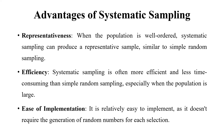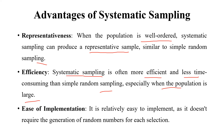Advantages of systematic sampling: first, representativeness — when the population is well ordered, systematic sampling can produce a representative sample similar to simple random sampling. Second, efficiency — systematic sampling is often more efficient and less time-consuming than simple random sampling, especially when the population is large. Third, ease of implementation — it is relatively easy to implement as it doesn't require the generation of random numbers for each selection.